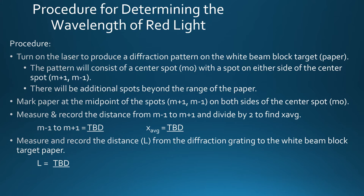The pattern will consist of the center spot M sub 0 with a spot on either side of the center spot, which is a plus 1 or negative 1. There are additional spots beyond the range of the paper. You will mark the paper at the midpoint of the spots M1 and M-1 on both sides of the center spot M0.